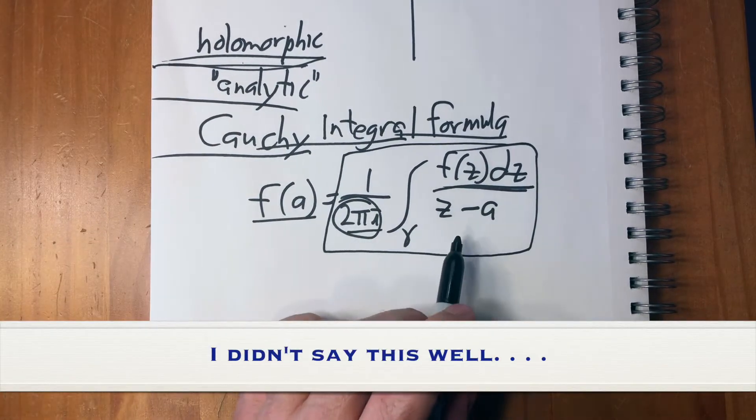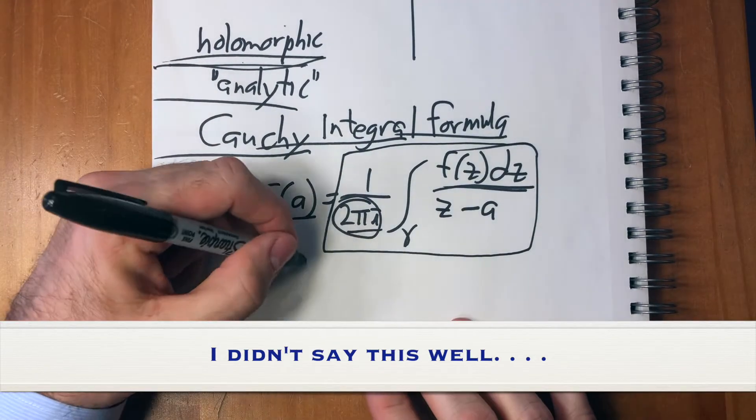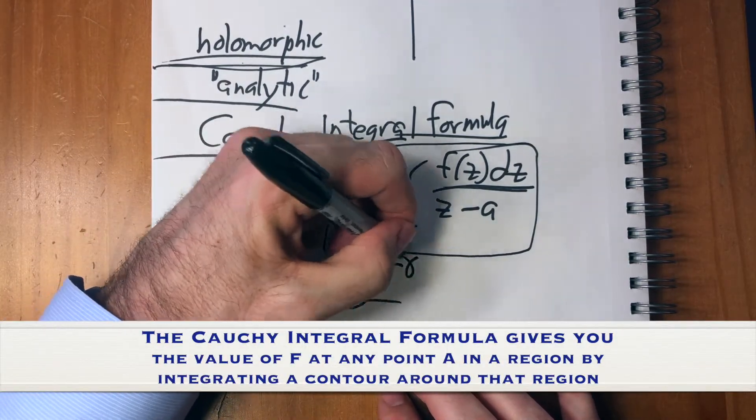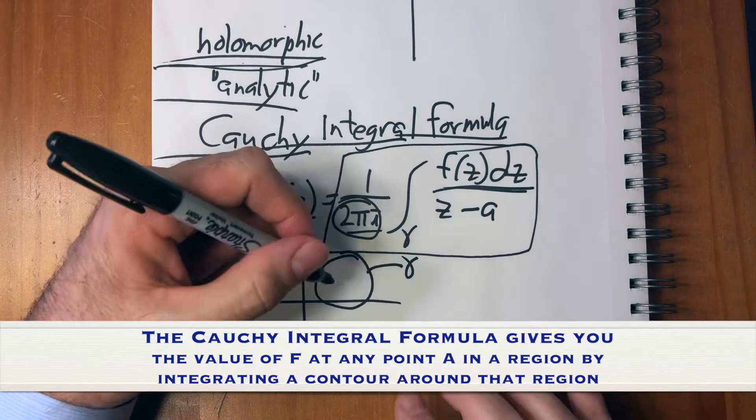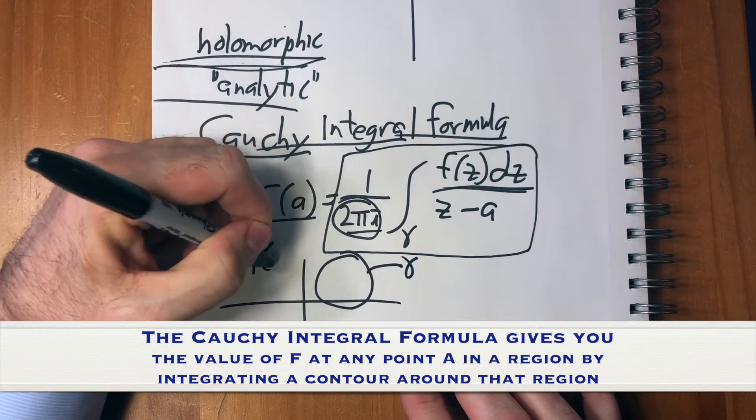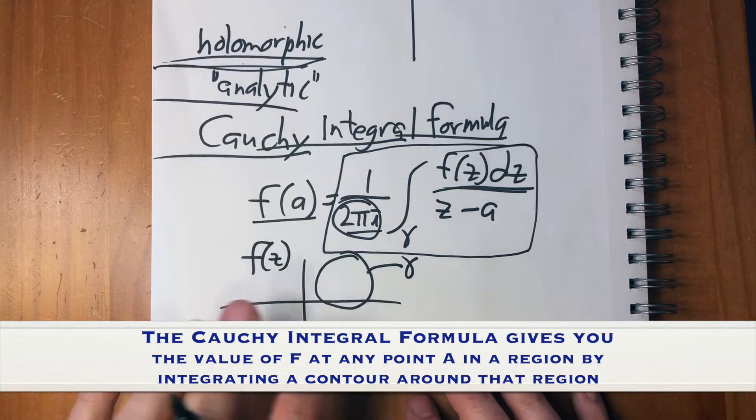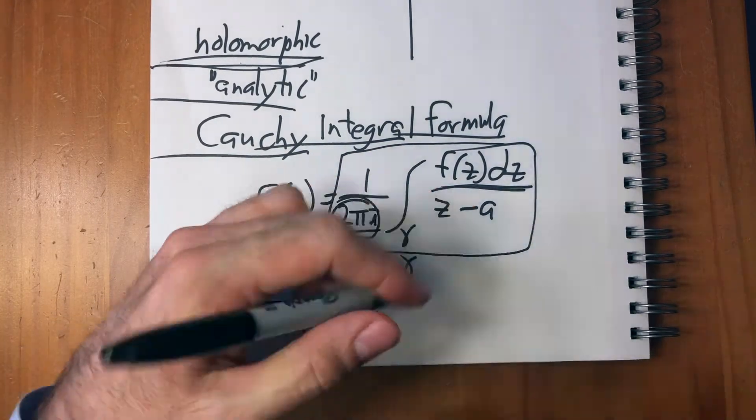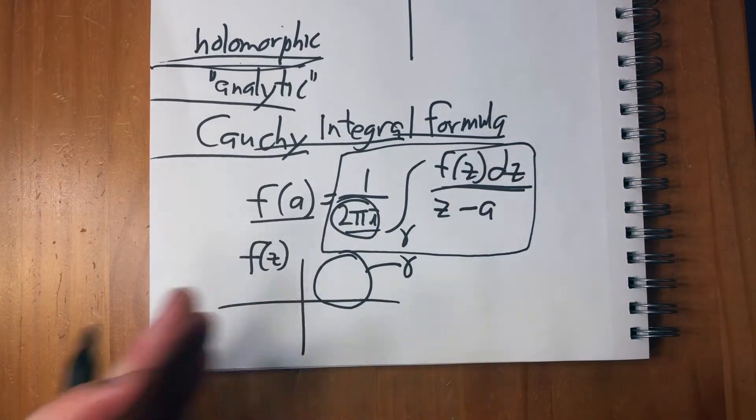So if we have, again, like this, say this is gamma and this is the function F. So it's coming out, going somewhere, you know, over to the range.